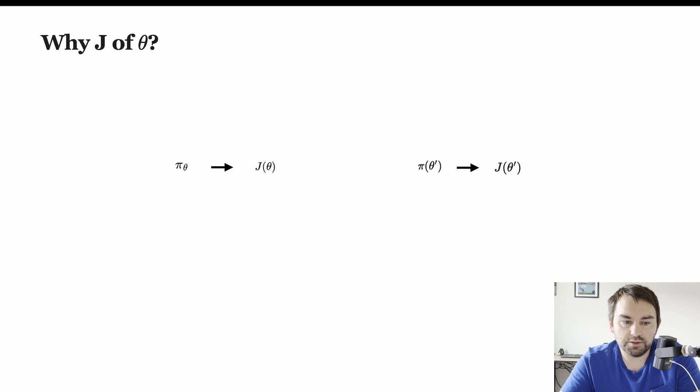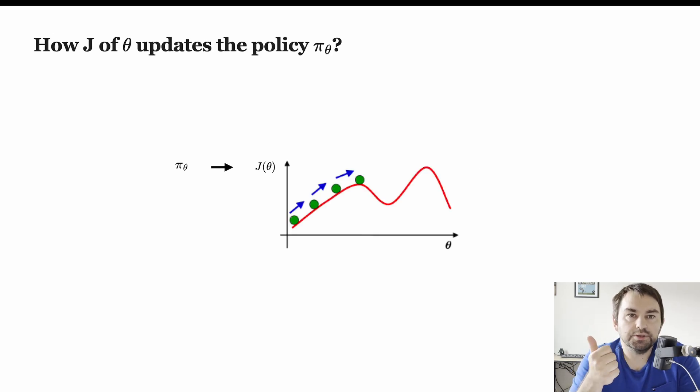Depending on which policy you're running, you'll get different performances. So if we are given some policy, π of θ, and we have its performance measure J of θ, then we can optimize the θ to get the maximum J. Because we seek to maximize the performance measure, the updates on θ approximate the gradient ascent in J. So unlike the gradient descent for a loss, we are actually doing the gradient ascent on this performance measure. So our update to θ is using this gradient of J of θ here. And this is just the stochastic estimate whose expectation approximates the gradient of the performance measure with respect to θ_t.